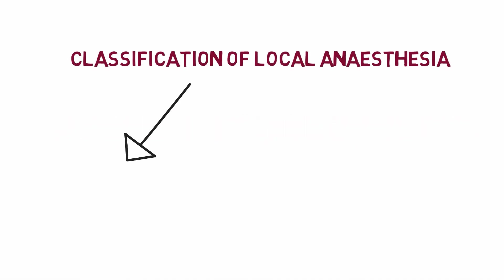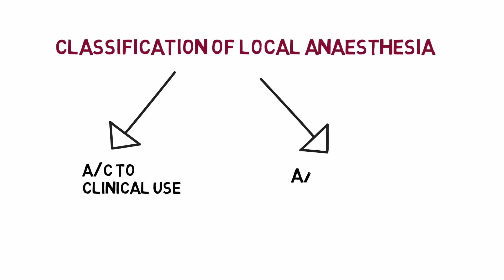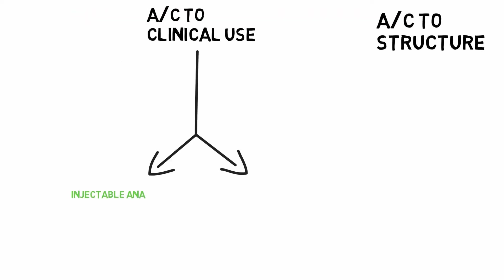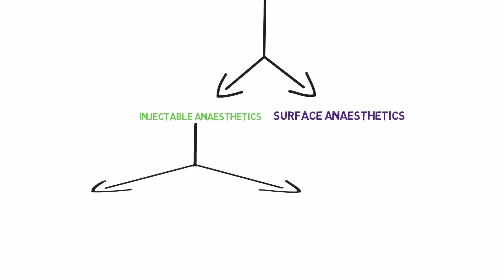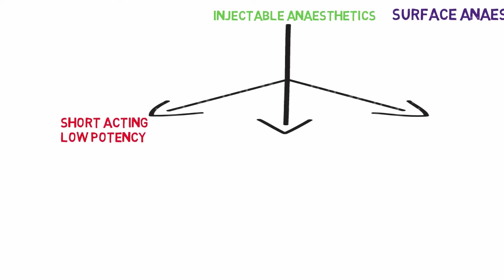Local anesthetics are classified on the basis of clinical use and structure. At first we are classifying on the basis of clinical use. It is of two types: injectable anesthetics and surface anesthetics.